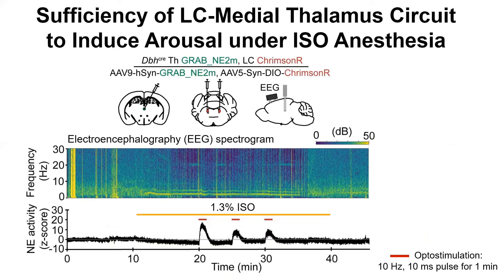I wanted to test the sufficiency of this circuit to induce arousal under anesthesia. For these experiments, I injected norepinephrine in the thalamus, injected optogenetic activators in the LC, and then implanted a fiber in the medial thalamus as well as an EEG device. The graphs show the EEG spectrogram on top and the norepinephrine activity trace on the bottom. Under anesthesia, there's an appearance of a delta band in the EEG and depression of norepinephrine activity. I'm able to induce norepinephrine release in the medial thalamus with optostimulation, but you can see that does not correlate to any significant desynchronization of the EEG.